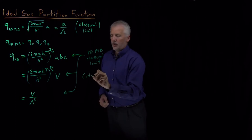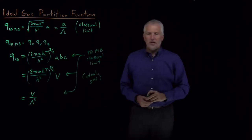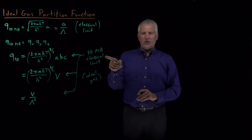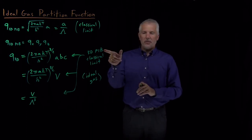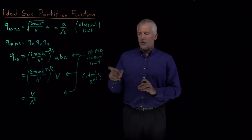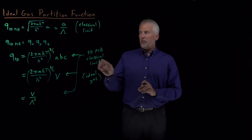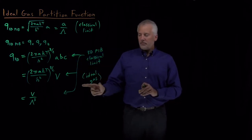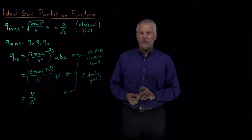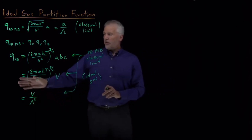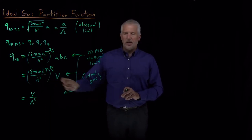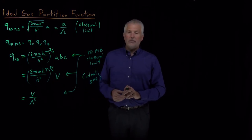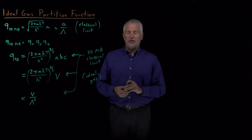A three-dimensional particle confined to a box in the classical limit — where it doesn't behave quantum mechanically but can have any energy — is just another way of describing what we call an ideal gas. When we consider a gas molecule confined to a box, we use the 3D particle-in-a-box model. If the energy levels are very closely spaced, as they are for a gas molecule in a box, we can approximate the partition function with this expression. But so far, this is the partition function for just one gas molecule confined to a box of volume V at temperature T.